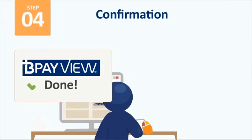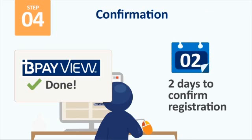And that's it — it really is that easy! Within two business banking days, your financial institution will be in touch. Then, when a bill arrives from one of your registered billers, you'll get a message in a form that you've already selected — either by SMS, email or bank message — to let you know.